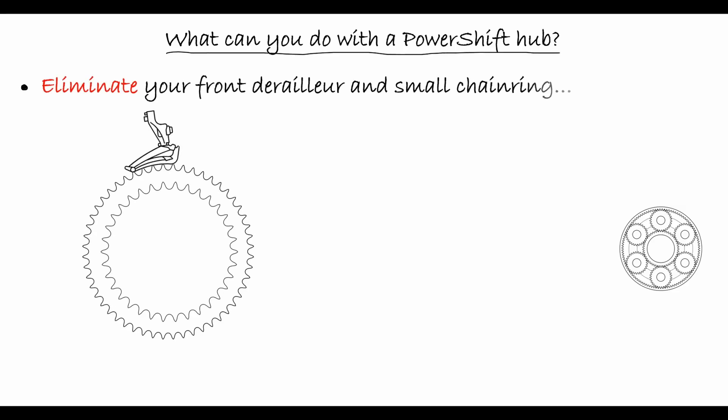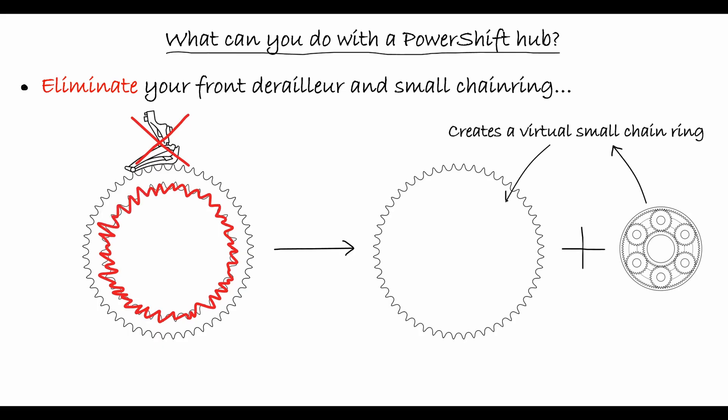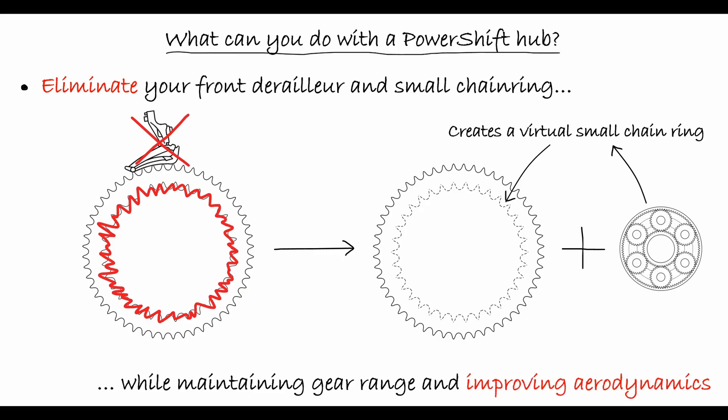Now, what can you actually do with a PowerShift Hub? Well, first of all, you can get rid of the front derailleur and the small chainring. The function of these components, namely shifting into a smaller chainring, is entirely taken over by the PowerShift Hub, as we discussed earlier. As an additional benefit, eliminating those components improves the aerodynamics of the bicycle.